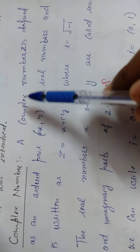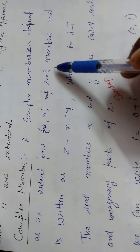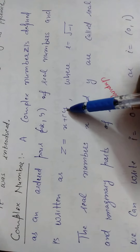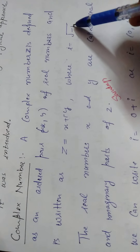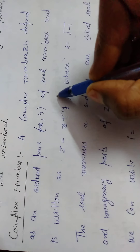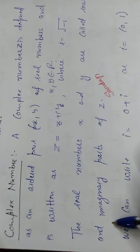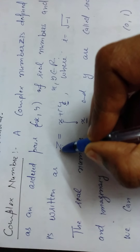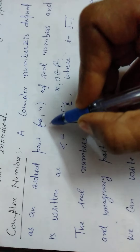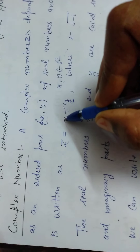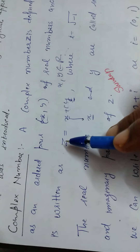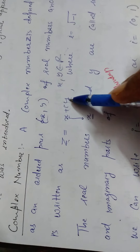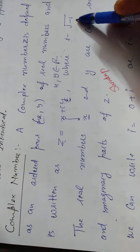Let us discuss what a complex number is. It is a simple definition: a complex number, denoted by the symbol z, is defined as an ordered pair (x, y) of real numbers, and z is written as x plus iota y, where iota is the symbol for the square root of minus 1. Here x and y are real numbers belonging to ℝ. We call x the real part of z and y the imaginary part of z.